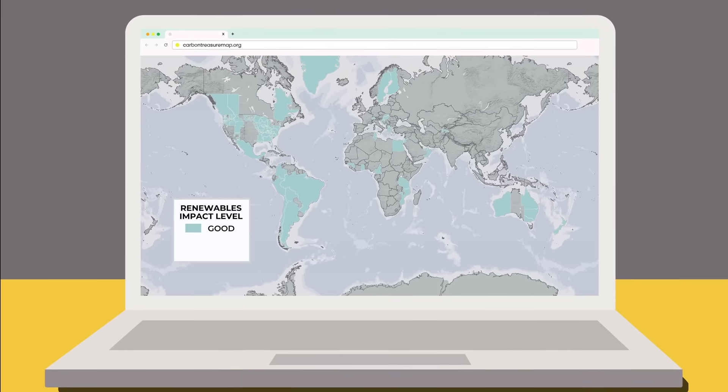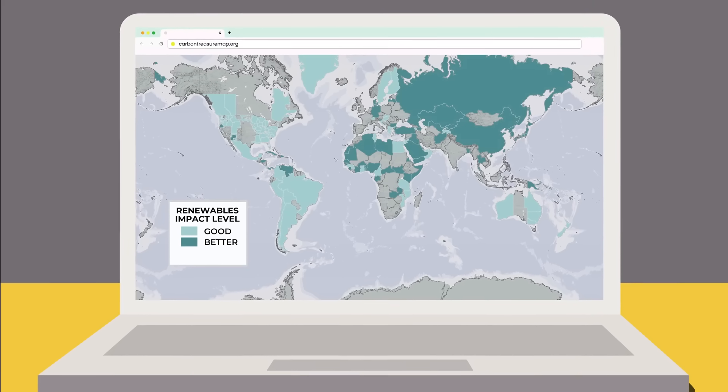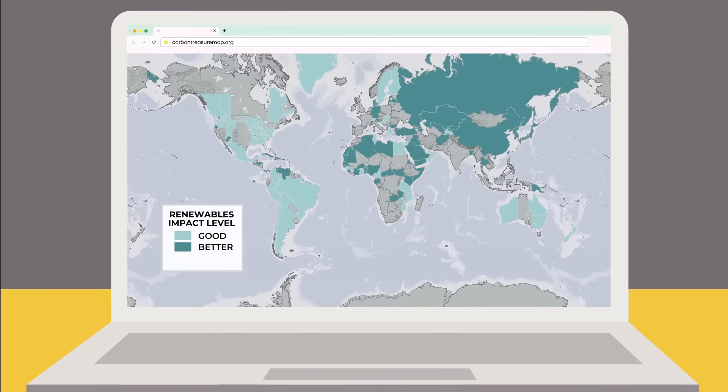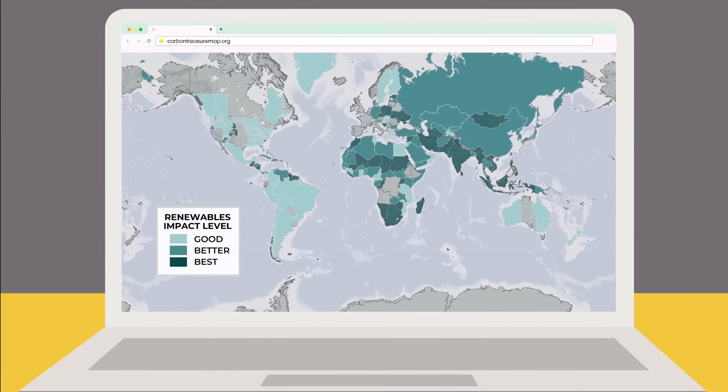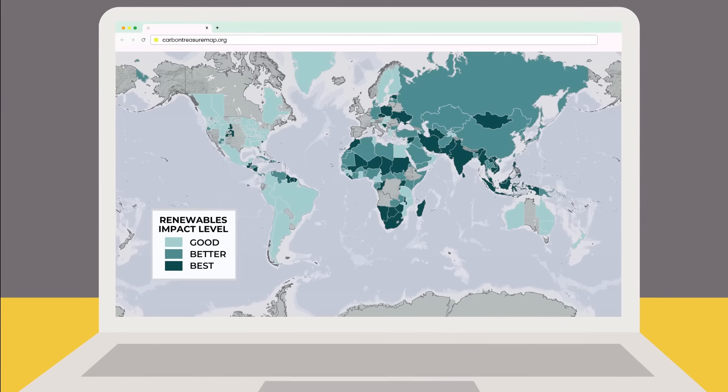The result? This map shows which regions are still heavily fossil fuel powered, which is where renewable energy can have the biggest impact today.